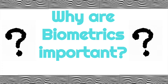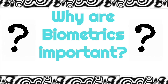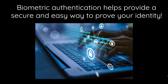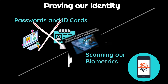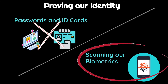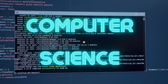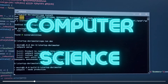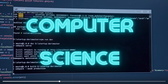The next thing we're going to explore is why are biometrics important and how do they apply to our own lives? This brings us to biometric authentication. If you can confirm who you are with a physical or behavioral characteristic that is uniquely you, it helps prove your identity. Biometric authentication allows us to move past passwords and ID cards, which can sometimes be less secure, and allows us to scan our physical and behavioral characteristics to confirm our identity. This takes place because of computer science. If you've ever used your fingerprint to open a cell phone or seen facial recognition to open a cell phone, you've seen biometric authentication in action.